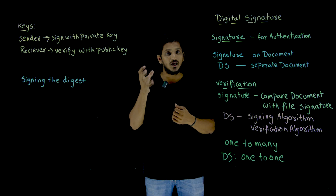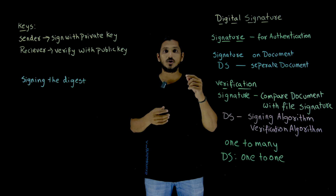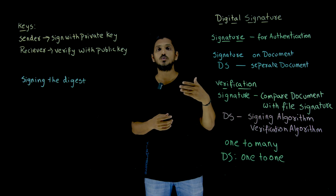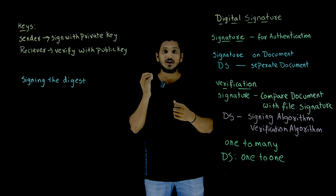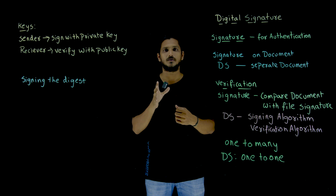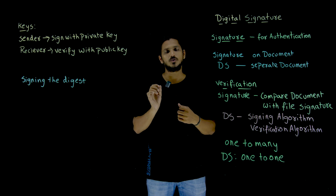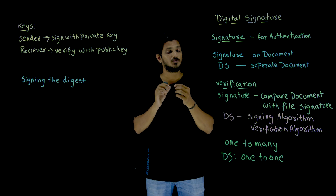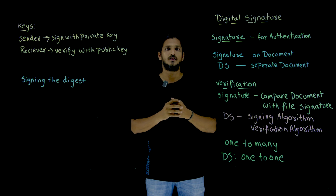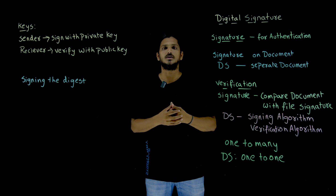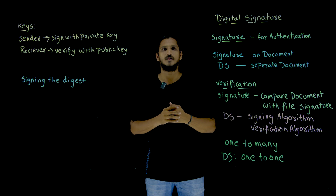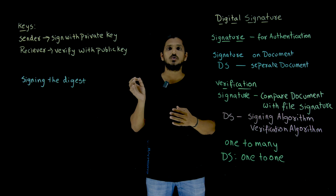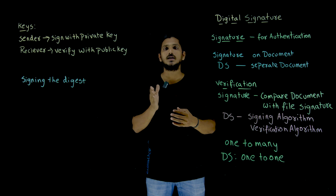Suppose if you have done a painting, on the painting you are going to sign. Why do you do all those things? Because a signature gives authentication — this painting is done by so-and-so person, this bank check is issued by so-and-so person. That person's signature should be there, then it provides authentication that it came from that particular person. The same way digital signatures are also used to provide authentication.